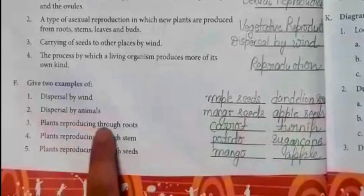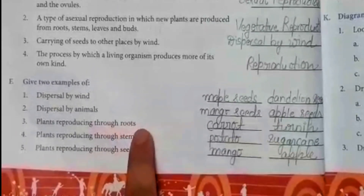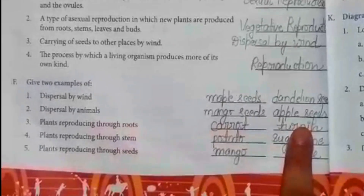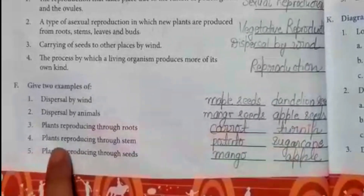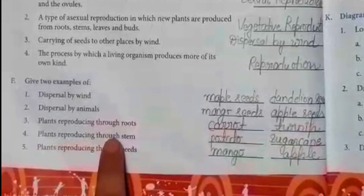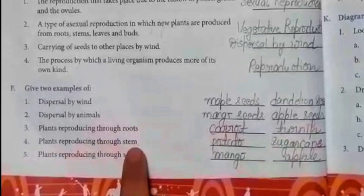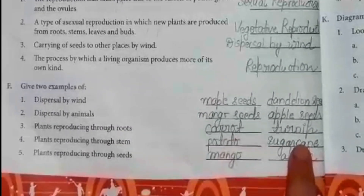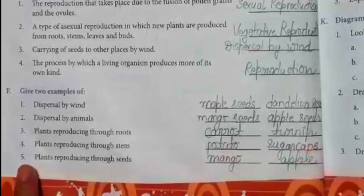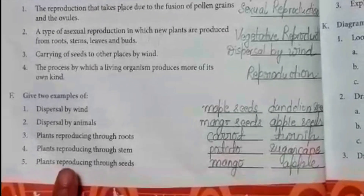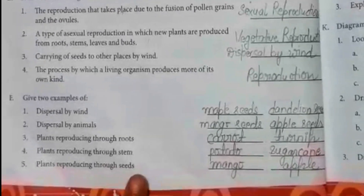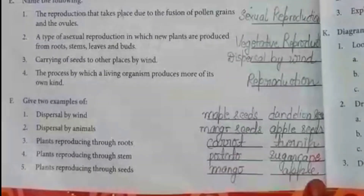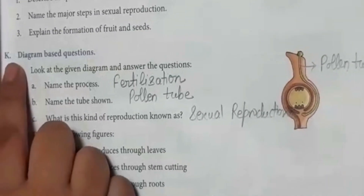Third: plants reproducing through roots — carrot, turnip. Fourth: plants reproducing through stem — potato and sugar cane. Fifth: plants reproducing through seeds — mango, apple.